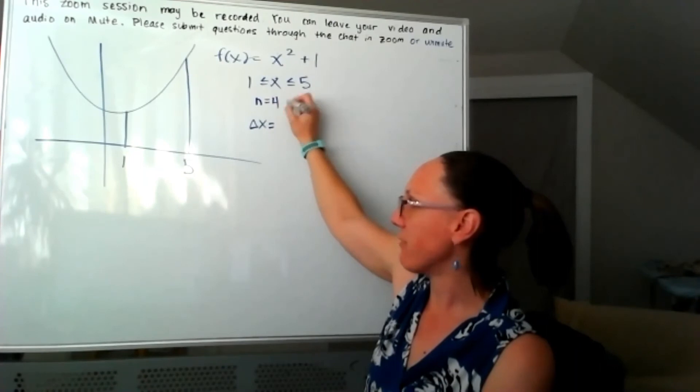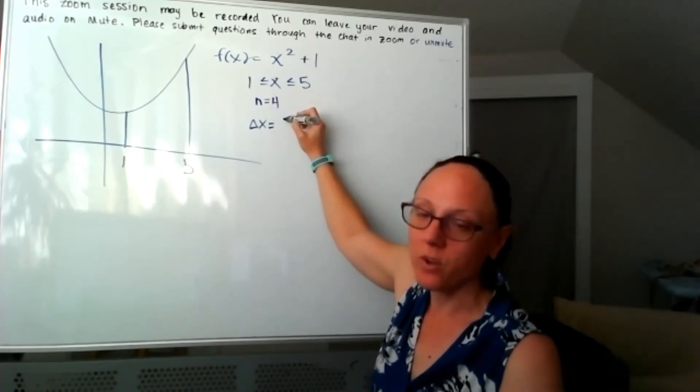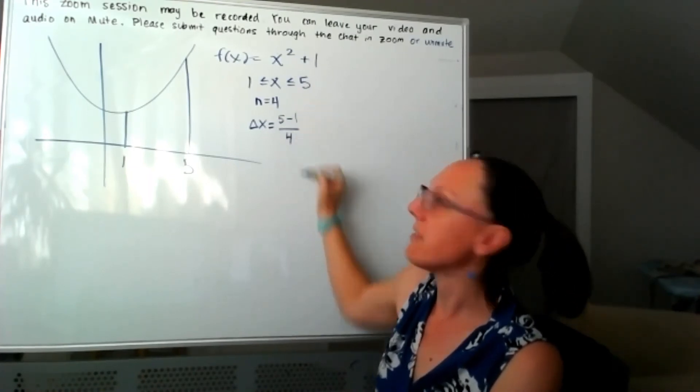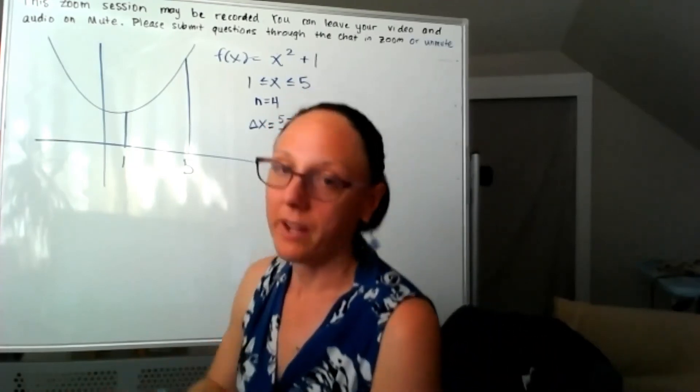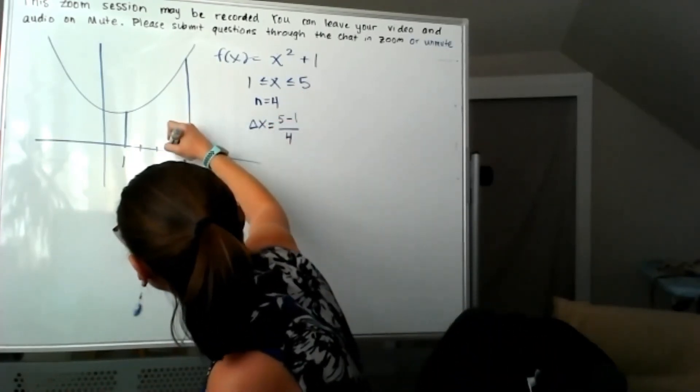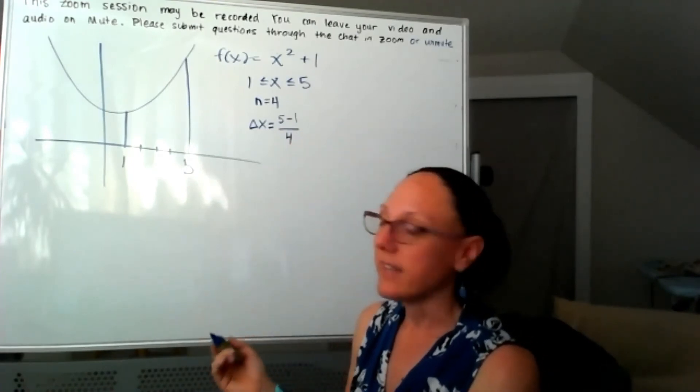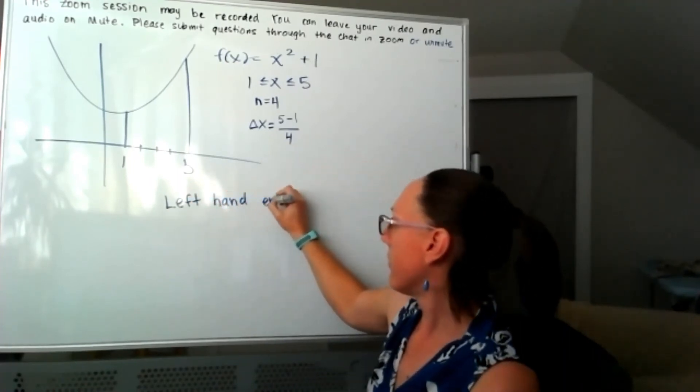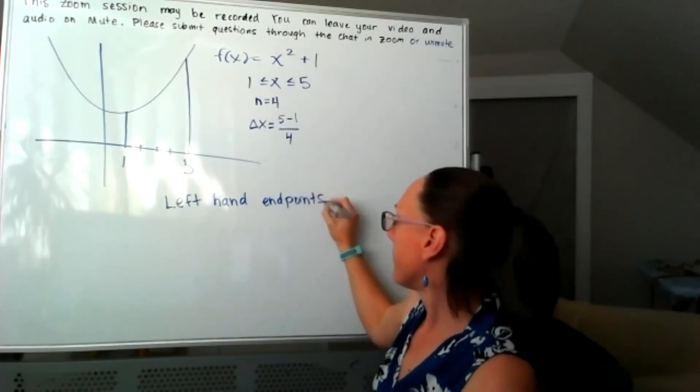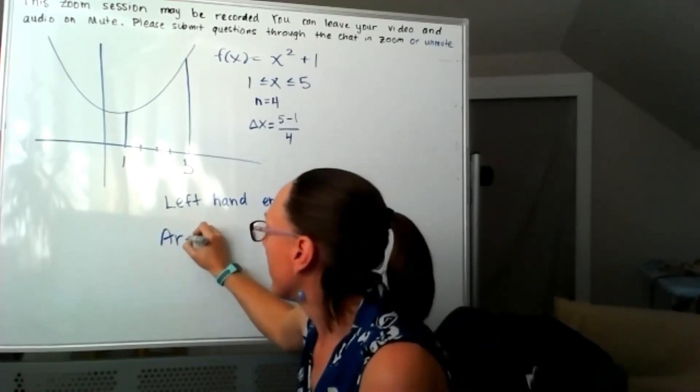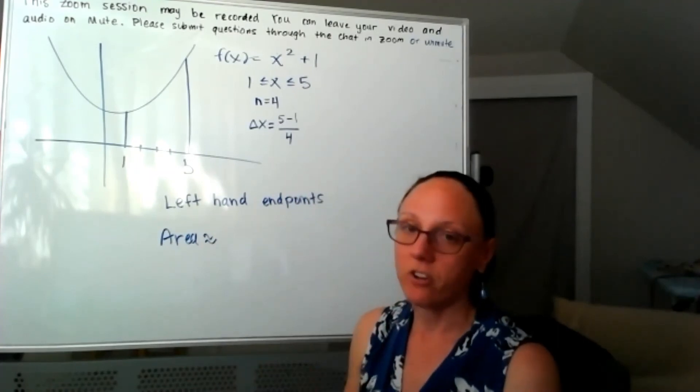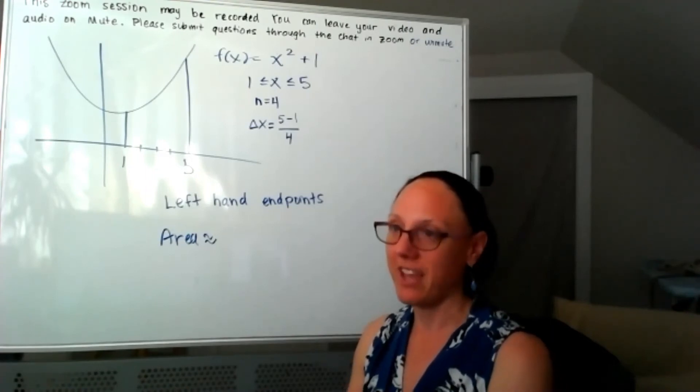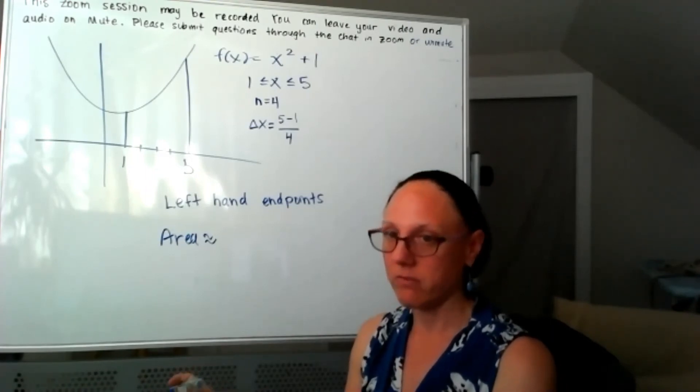Since we're breaking that up into four pieces, I already know the width is 1, but if I had to do the math this would look like 5 minus 1 divided by 4. So now I know that I'm breaking that up into four pieces. Let's say that I wanted to use left-hand endpoints. We're going to find our area by drawing in four rectangles and always using the left-hand side of the interval to figure out the y value.